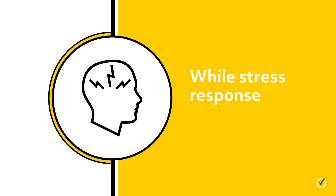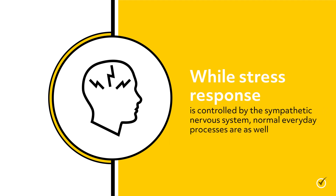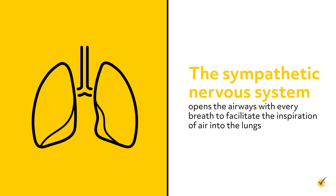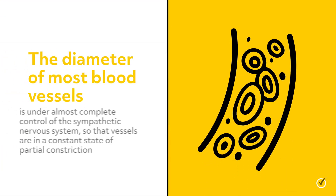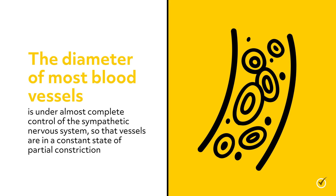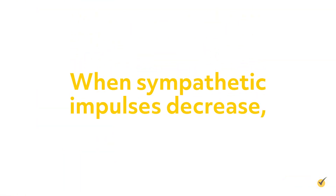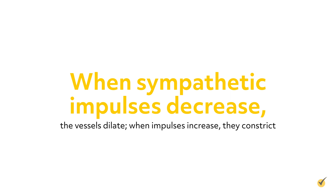While stress response is controlled by the sympathetic nervous system, normal everyday processes are as well. For example, the sympathetic nervous system opens the airways with every breath to facilitate the inspiration of air into the lungs. Additionally, the diameter of most blood vessels is under almost complete control of the sympathetic nervous system, so that vessels are in a constant state of partial constriction. When sympathetic impulses decrease, the vessels dilate, and when impulses increase, they constrict.